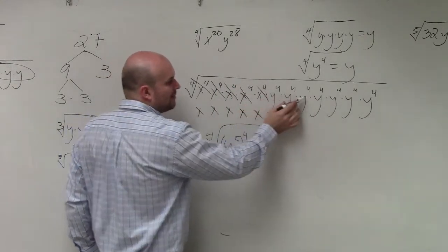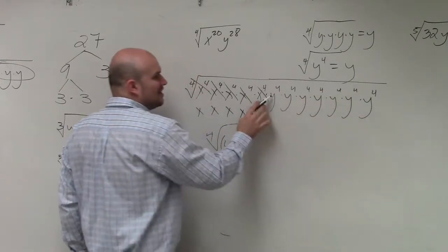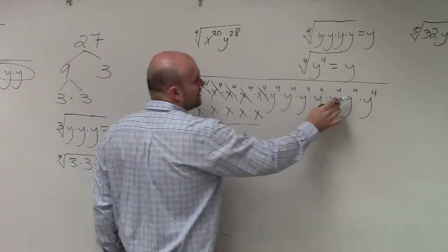And then we know this is really going to be y, y, y, y, y, y, y. So it's going to be one, two, three, four, five, six, seven.